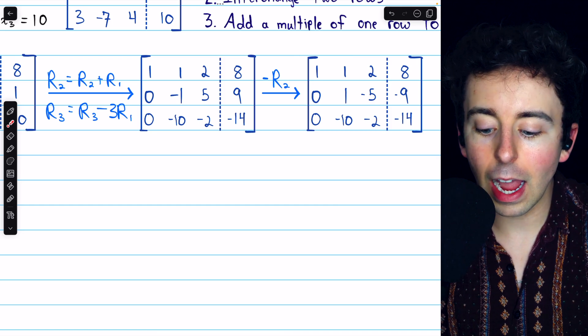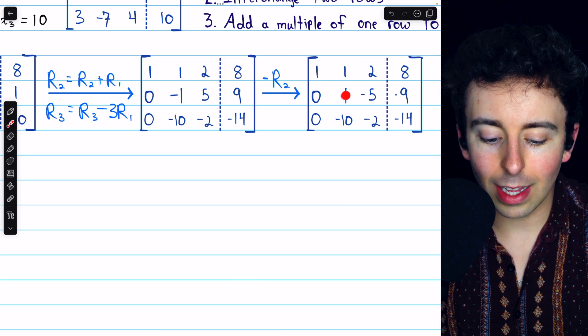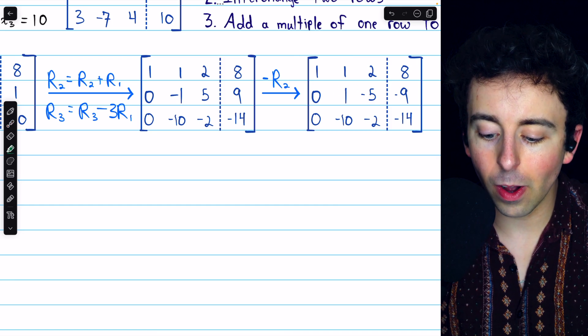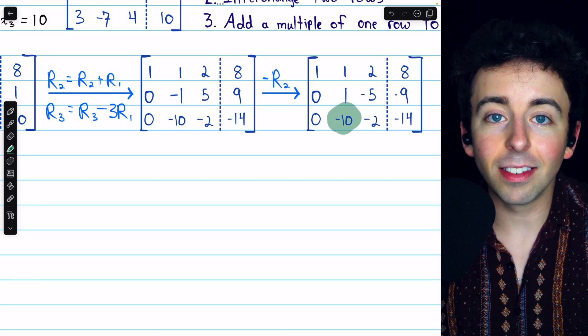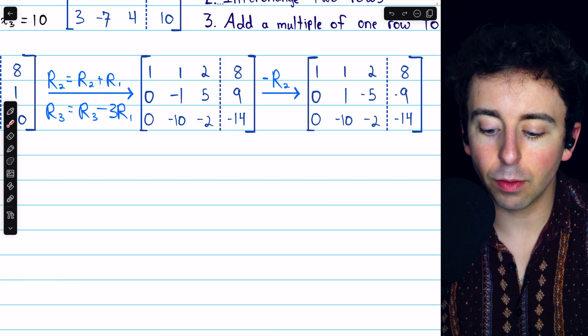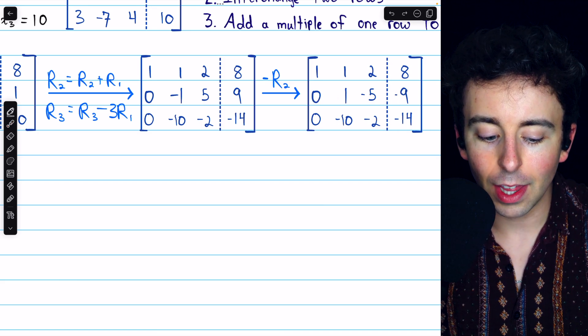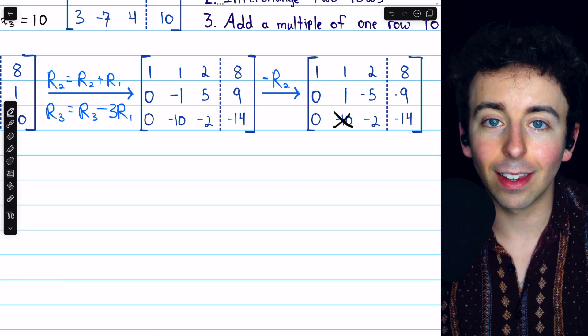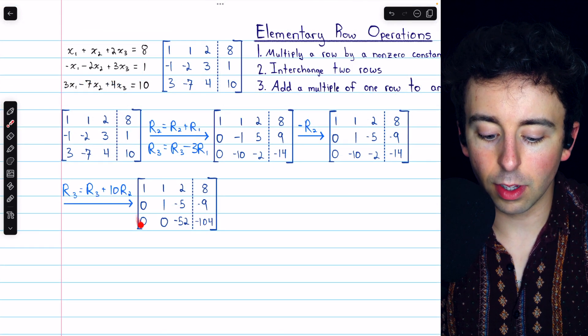So we've got a positive 1 at the beginning of row 2, just like we want. But we also need to get a 0 below it now. So to accomplish that, we will add 10 copies of row 2 to row 3. Thus, this negative 10 will be cancelled out. And doing that gets us to this matrix here.